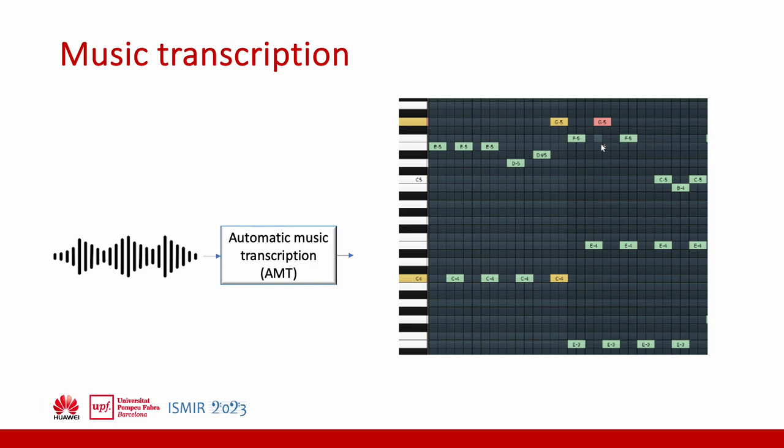In automatic music description, the goal is to transcribe the notes present in a certain audio signal. Nowadays, this is usually achieved with the help of a neural network.